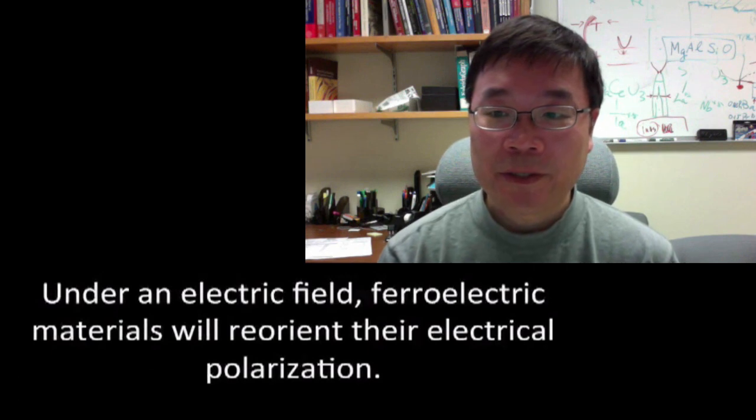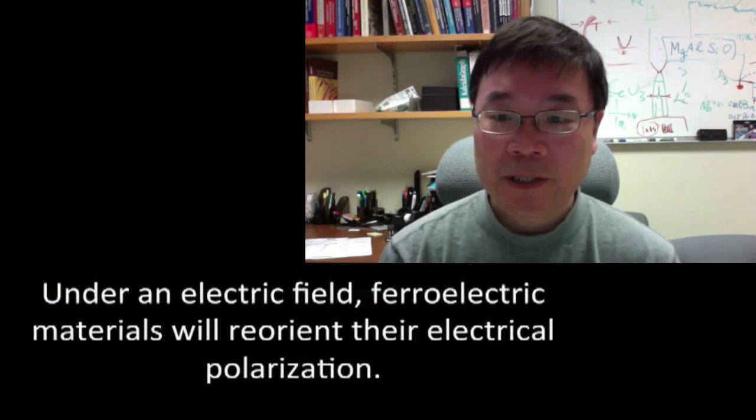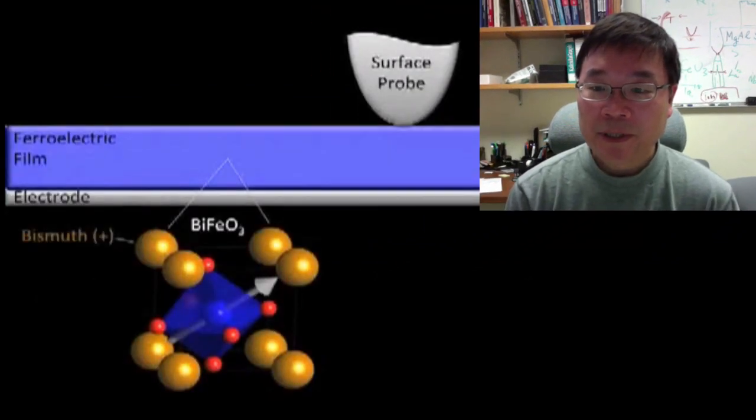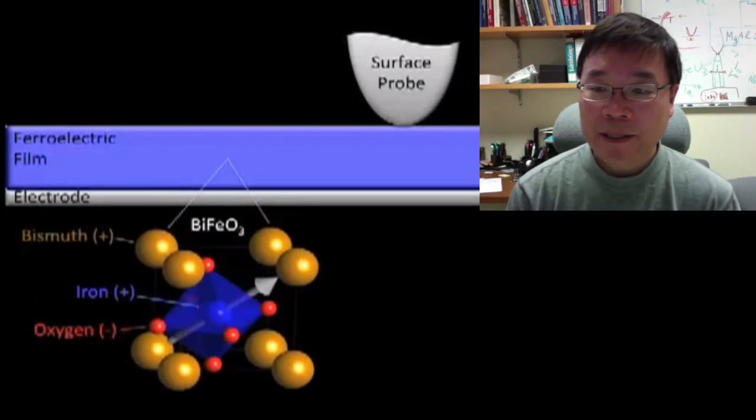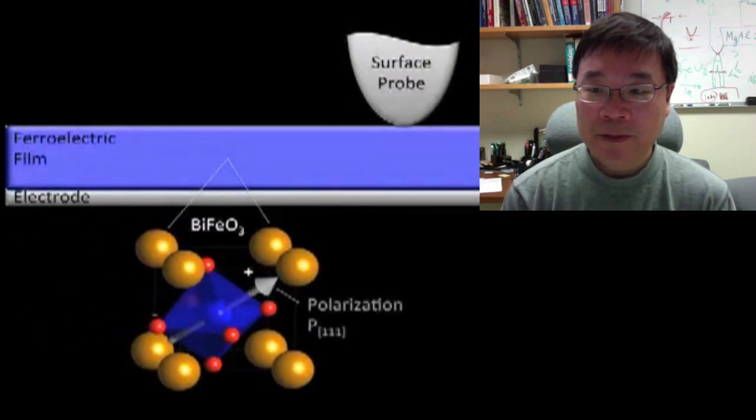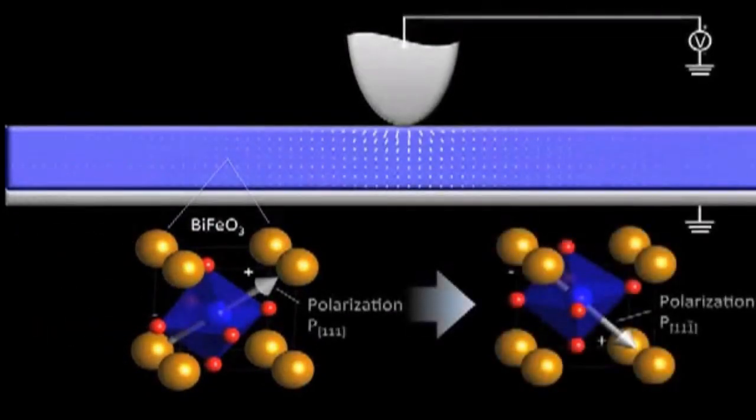So I guess to start off, I was wondering if you could just explain what a ferroelectric material is. The ferroelectric material is a material which is characterized by its electrical polarization, which can be reoriented by the external electric field. That means if you use this as a memory effect for digit number one or zero, it will stay unchanged until you switch again. So that means this is a non-volatile memory device.